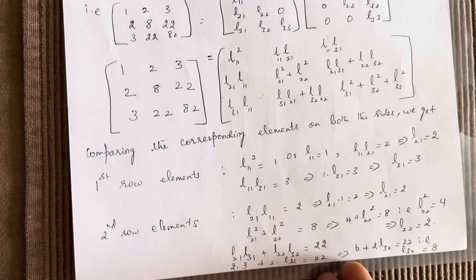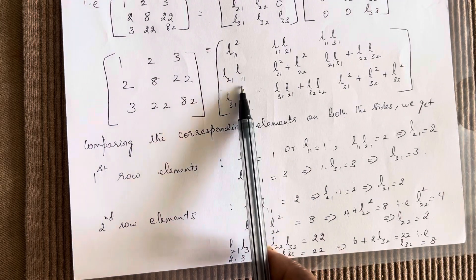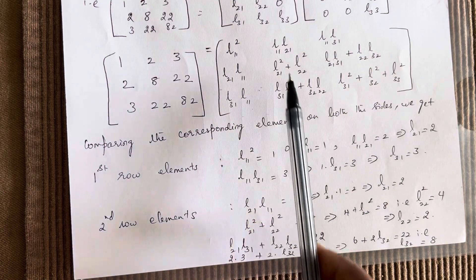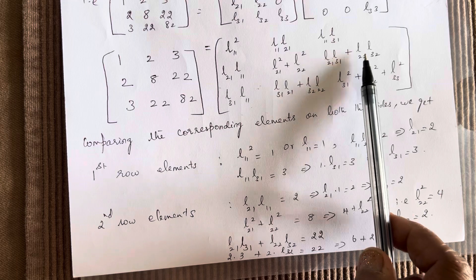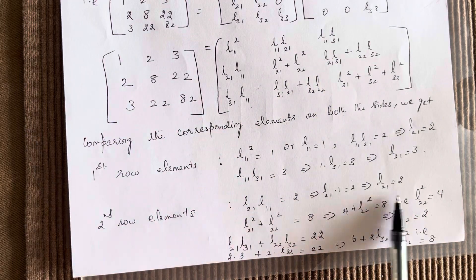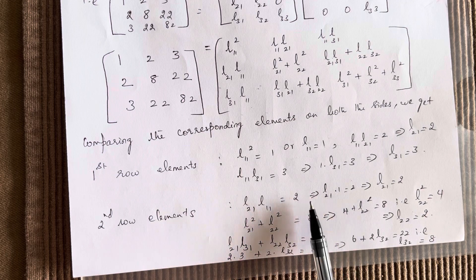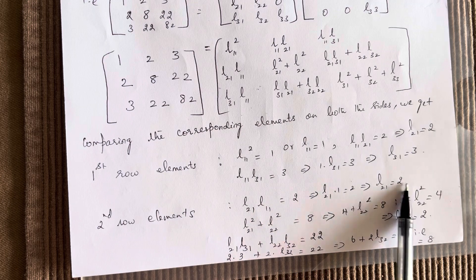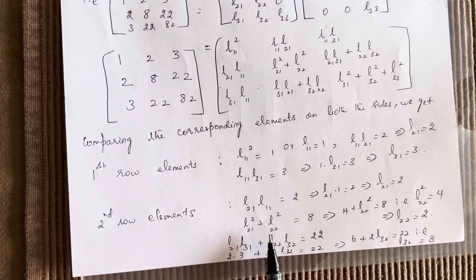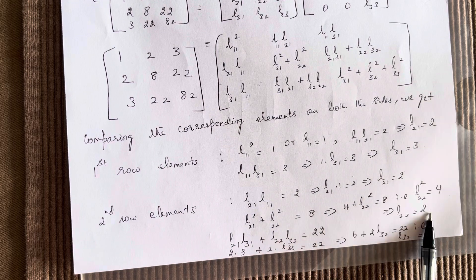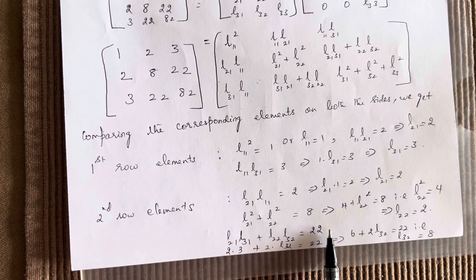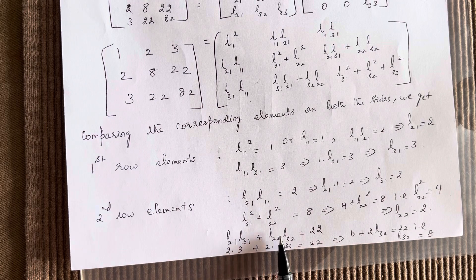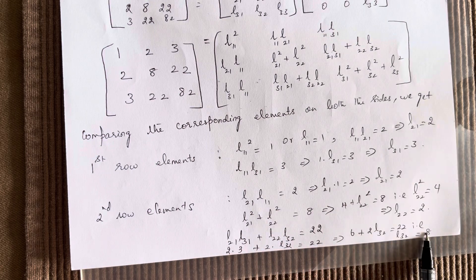Now checking the second row elements: L21·L11 equals 2, which confirms L21 equals 2. L21 squared plus L22 squared equals 8, and substituting L21 as 2 gives L22 equals 2. From L21·L31 plus L22·L32 equals 22, substituting the known values L21=2, L31=3, L22=2, we find L32 equals 8.